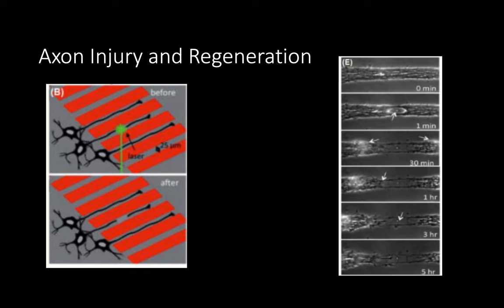Because microfluidics allow easy axon isolation, axon injury and regeneration studies are easier to control. In this study, axons were allowed to grow in a microfluidic device. After developing, a laser was used to sever a single axon while the rest of the neuron and axons were monitored. To the right, you see the progressive healing over 5 hours. Because of the precise control, researchers could better investigate the mechanism of nerve healing. This is the type of science that hopefully precedes therapeutics to heal nerve damage.